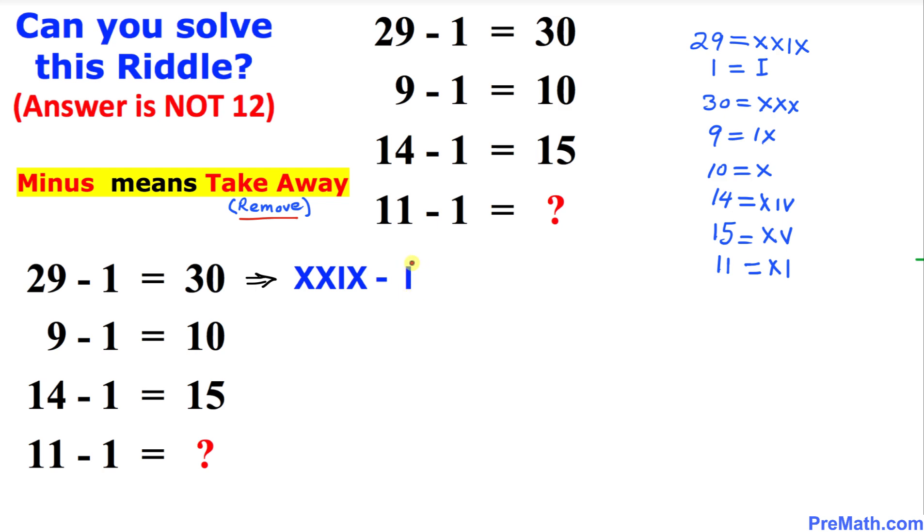So we got on this side three X's - that means that is equal to 30. Likewise, I have converted 9 minus 1 into Roman numerals, and we are going to take away 1 from this side.